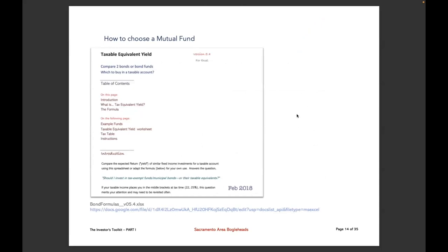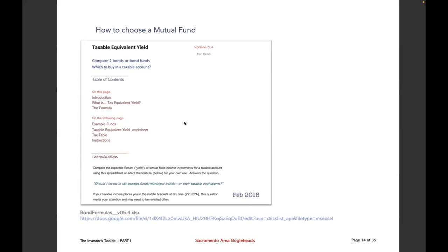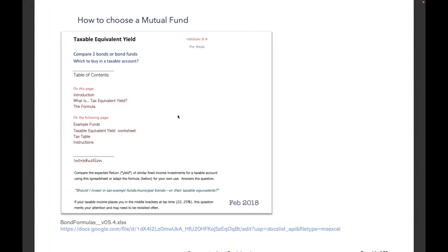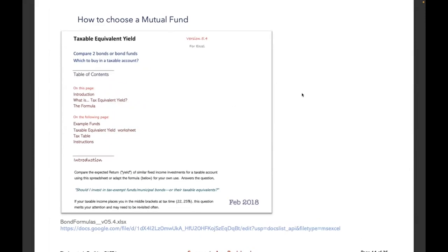Now on how to choose a bond fund — I have something I call 'Bond Formulas,' developed initially around 2016–2017. It's another Excel spreadsheet that's gone through numerous iterations based on member feedback. There's nothing really outdated except the tax brackets, which you can easily change. This is for determining tax equivalent yield — it won't be necessary if you're in a very low tax bracket, but if you're in a middling bracket or your income changes significantly year to year, this may be a concern.